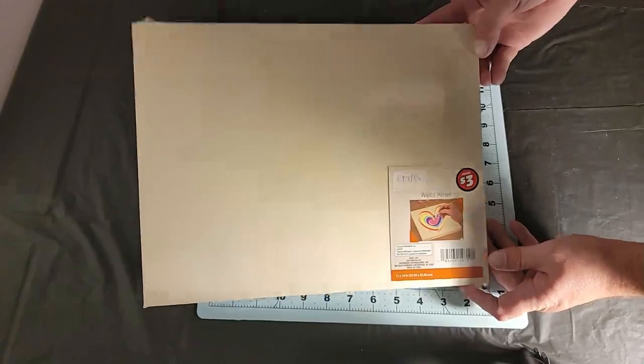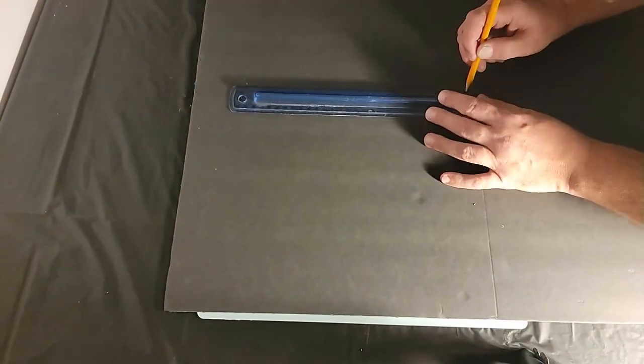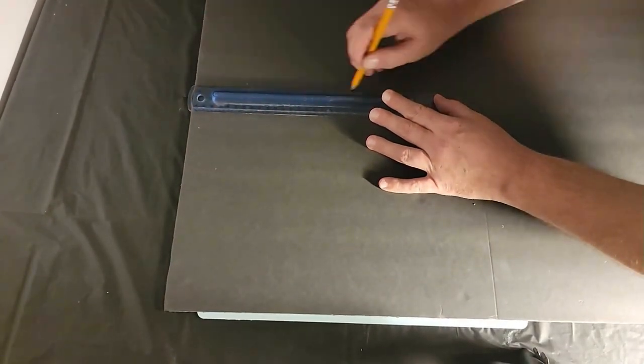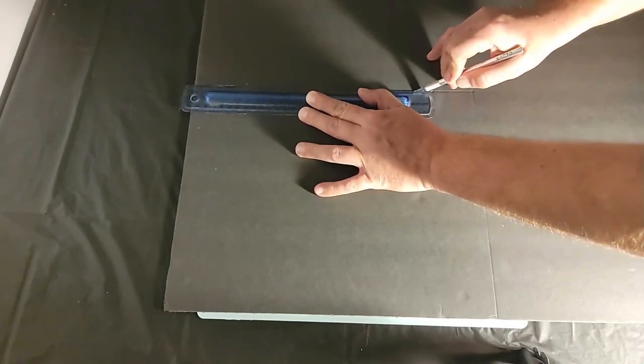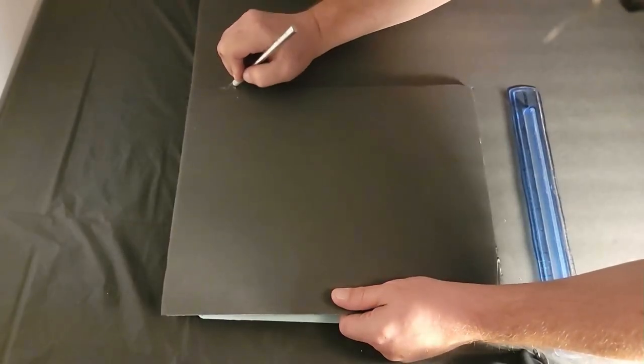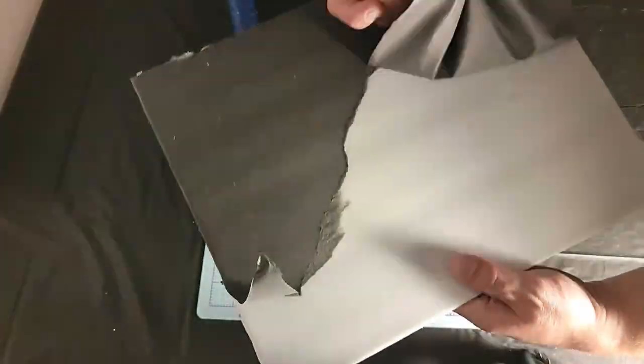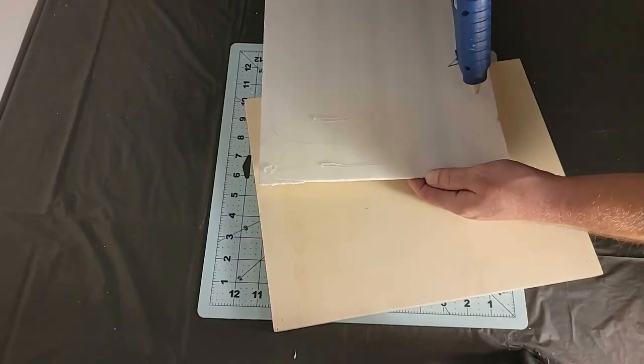To begin with I measured some foam board that I got from the Dollar Tree to fit the top of a painting panel that I also got from the Dollar Tree and cut it to fit the top. Then I peeled off the paper covering the foam board and glued it down to the wood panel.